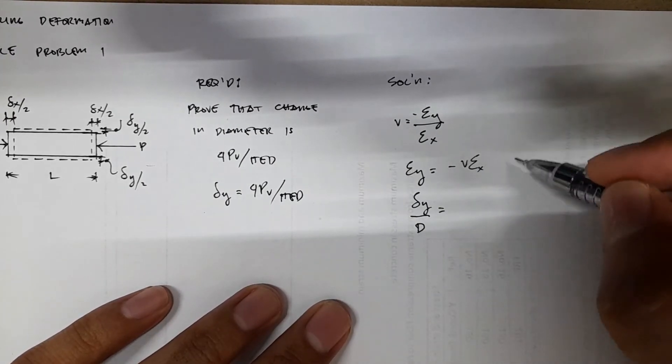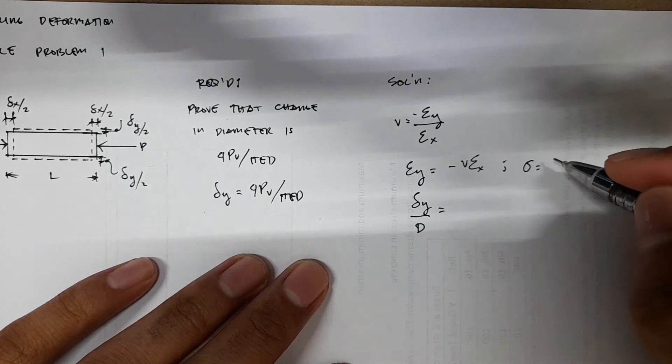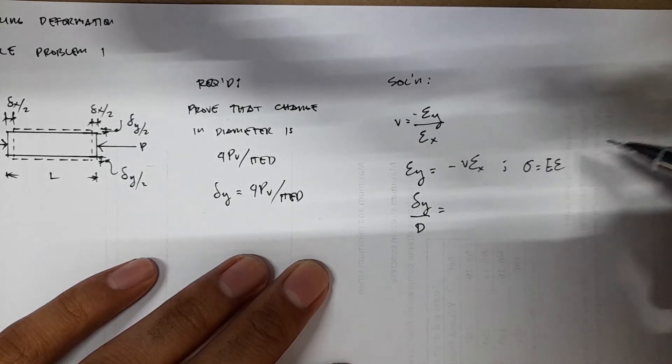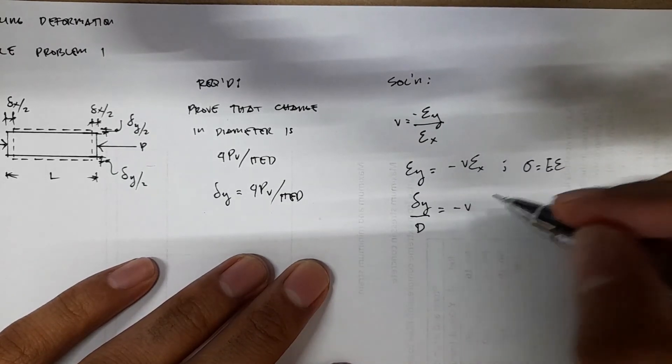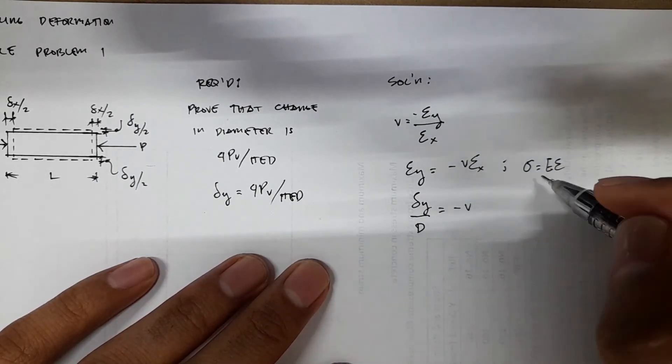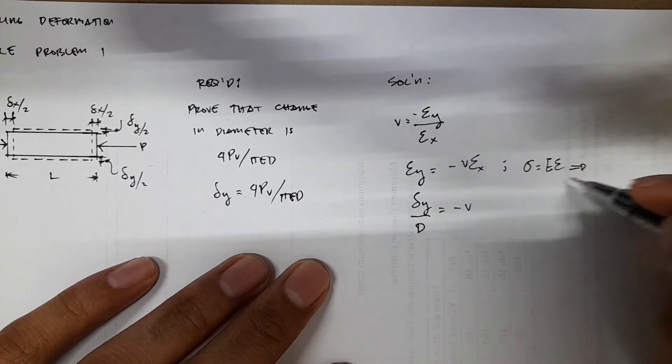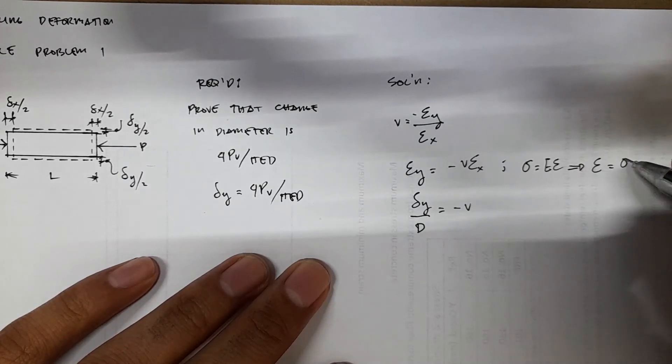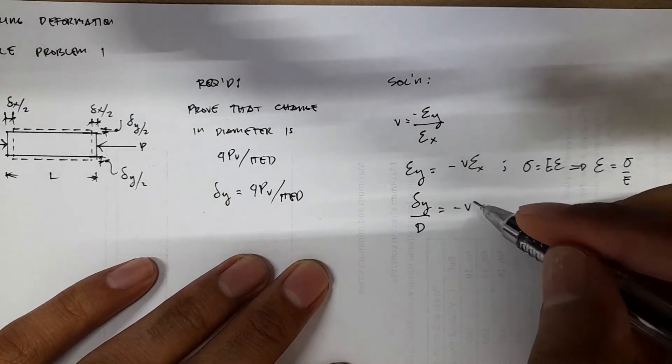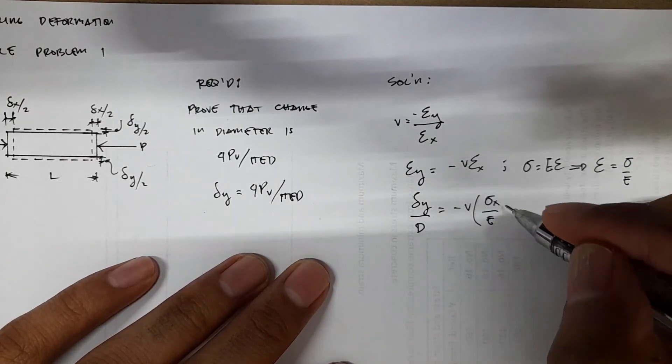And we also know from Hooke's law that the stress is proportional to your strain, so you now have negative V times your, this one, if you want to get this, you'll have over E. So you'll have stress x over E.